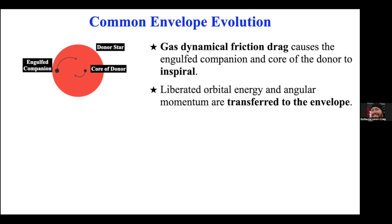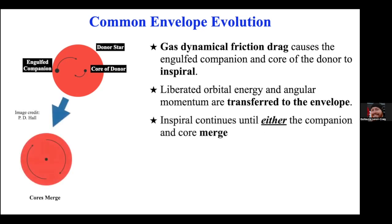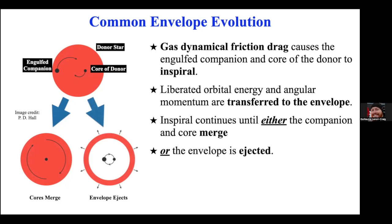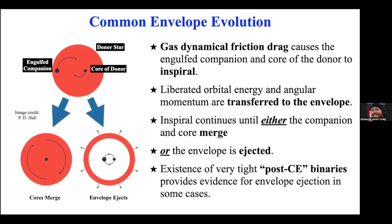The liberated orbital energy and angular momentum are transferred to the envelope. This continues until either the companion and core merge — which happens in some cases — or enough energy and angular momentum are transferred that the envelope actually gets ejected. We see a lot of observational evidence for the latter because we see binary systems in very, very tight orbits — called post-common envelope binaries — that could not have gotten into such orbits any other way.